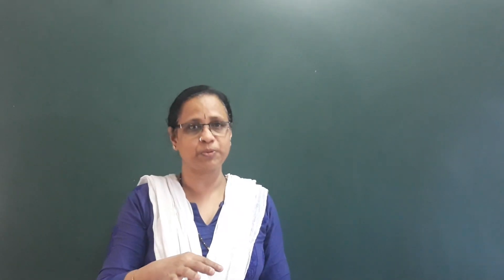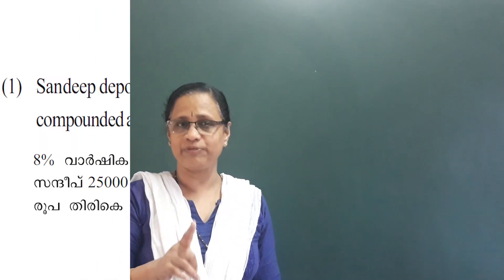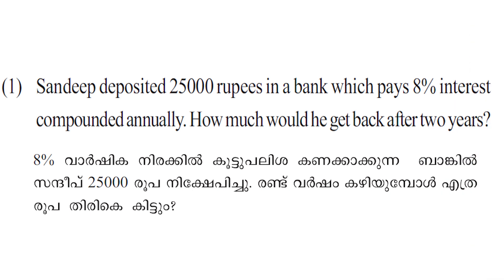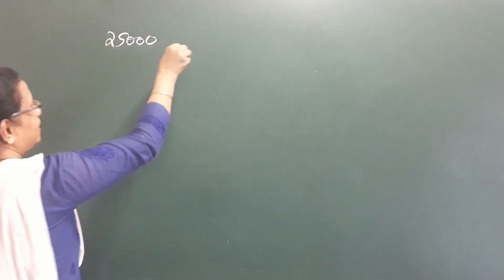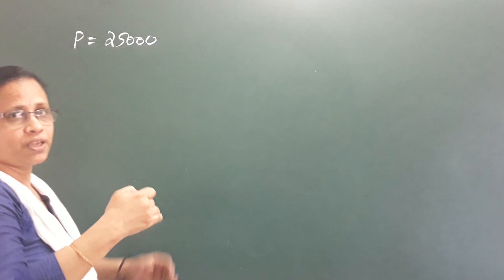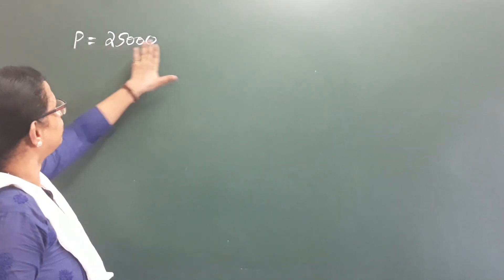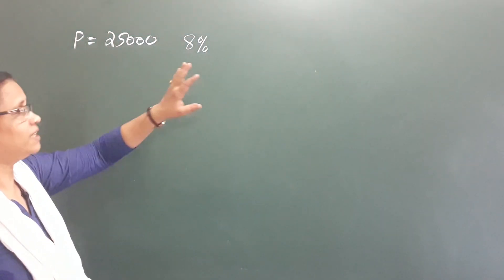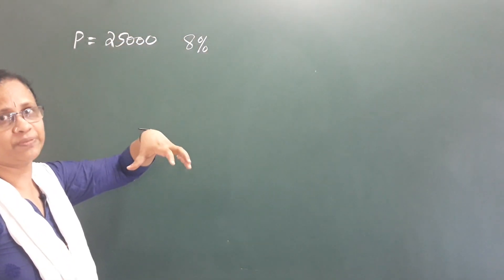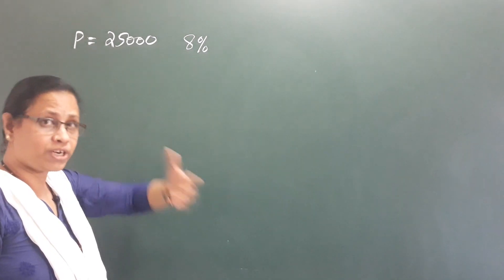Page number 90, practice problem. First question: Sandeep deposited 25,000 rupees in a bank which pays 8% interest compounded annually. How much would he get back after 2 years? The principal amount is 25,000 rupees and the rate of interest is 8%.